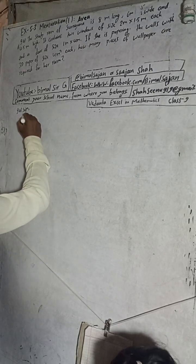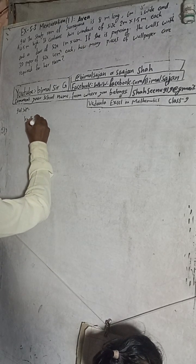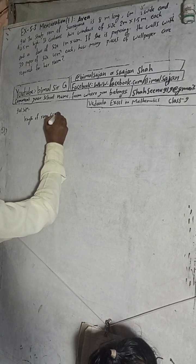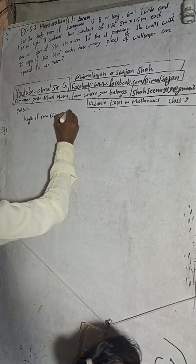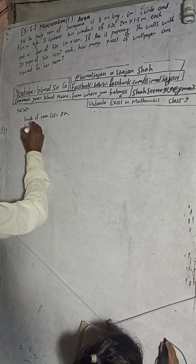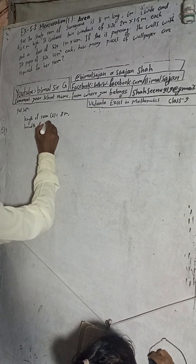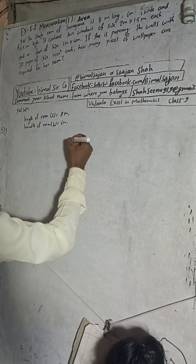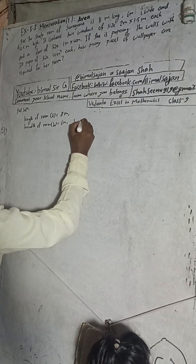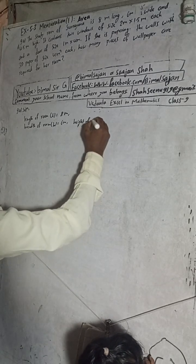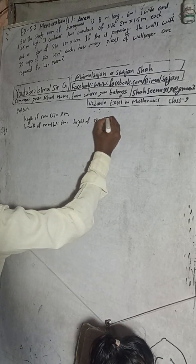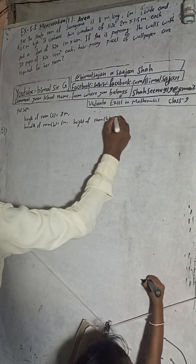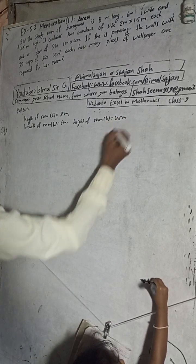Now here, length of the room L is equal to 8 meter long. Breadth of room B is equal to 6 meter wide. And height of the room is equal to 4.5 meter.